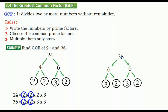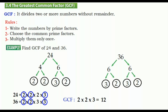Now we are going to multiply the common prime factors only once. Twos only once, threes only once. So the GCF is two times two times three. The answer is 12. That's it — thanks for watching, see you next lesson!